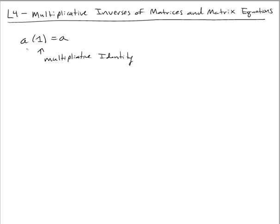Now, is there a similar property for matrix multiplication? Is there some matrix I such that matrix A times matrix I gives back matrix A, and also in the other direction, the identity matrix I times matrix A gives back matrix A? A square matrix with ones down the main diagonal from upper left to lower right and zeros everywhere else does not change the elements in products with that matrix.